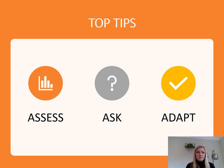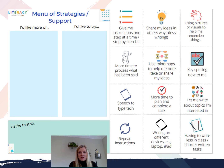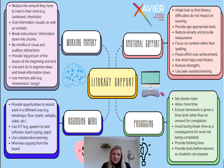And finally, Adapt — make adaptations to quality first teaching to ensure that pupils with literacy difficulties are able to access the learning. This framework helps identify exactly how you can support children, because often when you ask children how you can help with their literacy they say they don't know, as they don't know what options are available. By completing this framework with them, showing them the different options, you can really identify what is helpful, what isn't, and what you can do going forward based on information gathered from the SENCO, parents, and the child themselves.